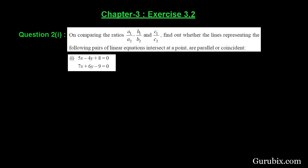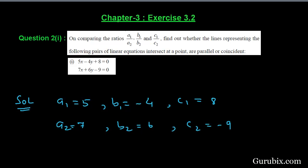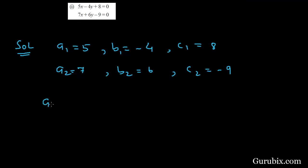Let us see how to solve this question. Here in this pair of linear equations, a1 is 5, b1 is minus 4, c1 is positive 8, a2 is 7, b2 is 6, and c2 is minus 9.